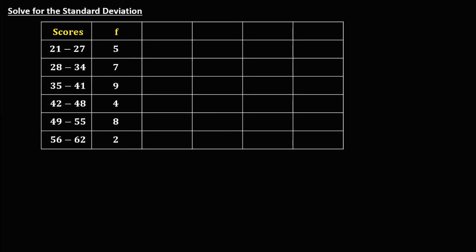For the second problem, solve for D and put 0 at the middle class. Since we have an even number of classes, we can choose between two classes for the middle class. Here, I put 0 on the third class. Going up is negative, going down is positive. D² values are: 4, 1, 0, 1, 4, and 9 (since the last D value is 3).